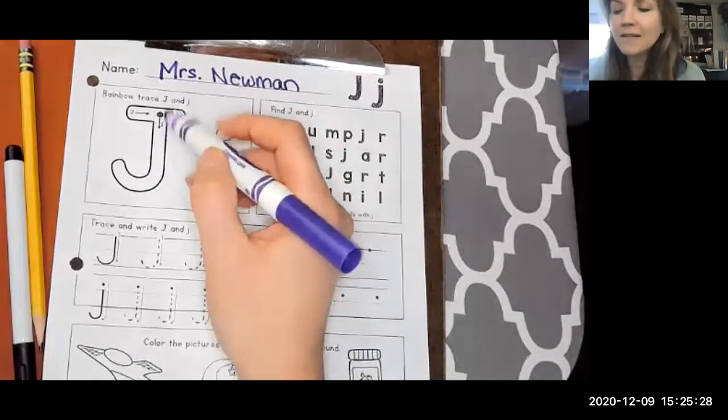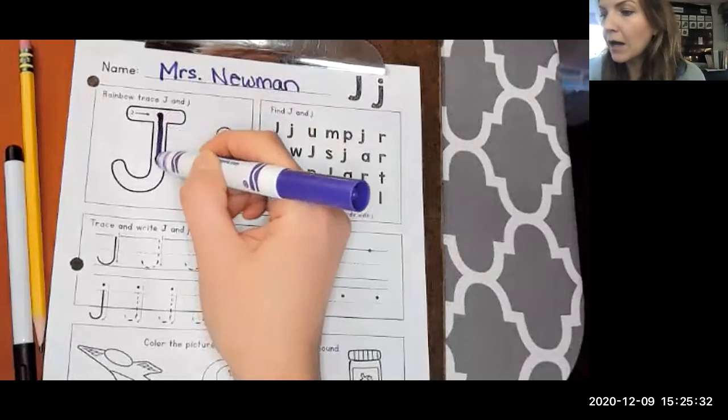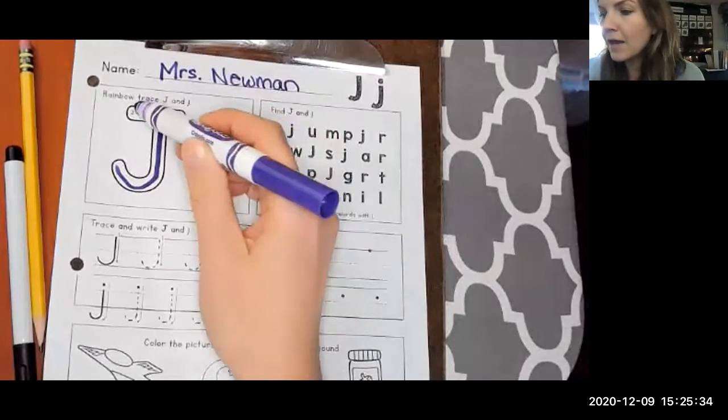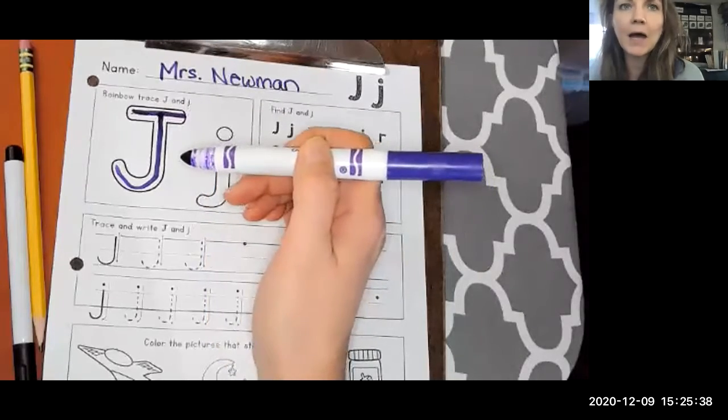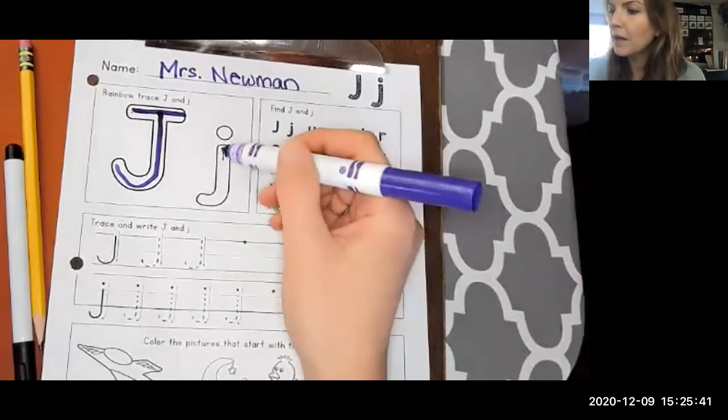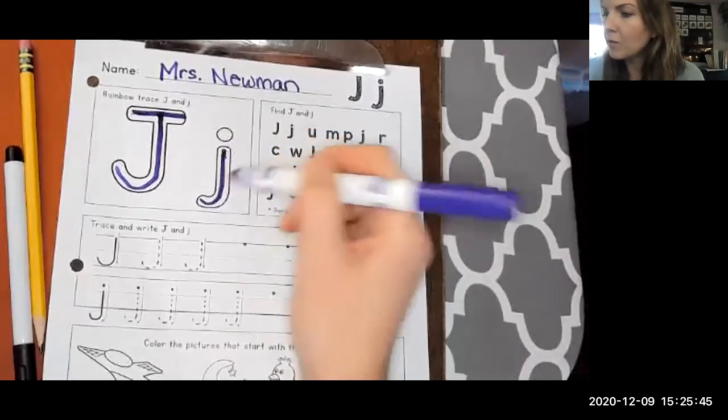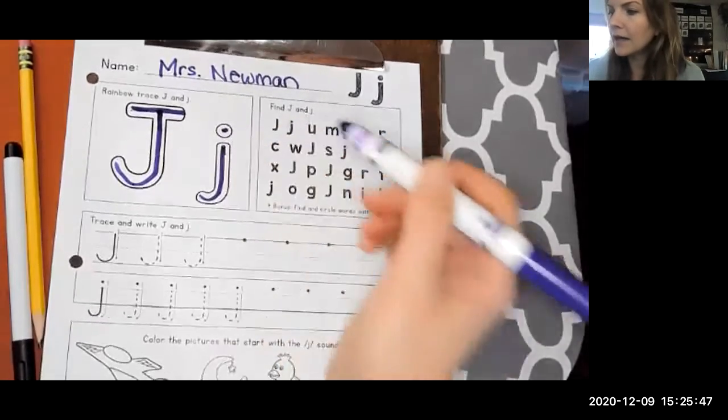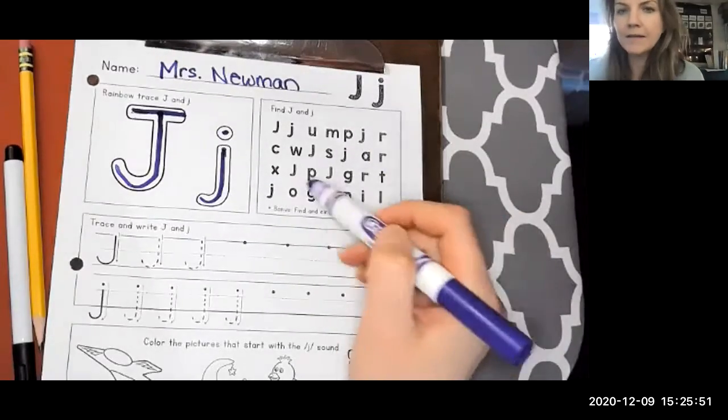Time to trace. We got to start at that top dot, go down, loop up. And then on the top, we're just going to do a dash, kind of like an I yesterday, right? We just draw a line across the top. And here's our little J. Let's go down, loop, and our dot, kind of like I. I think you're getting really good at this.